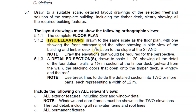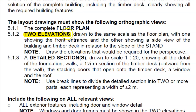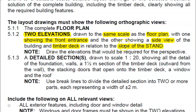Let's take a look at what is specified. You have to draw two elevations to the same scale as the actual floor plan, which for most of you will be 1:100. One of the views must show the front entrance, and the other shows a side view of the building including the timber deck in relation to the slope of the stand. The slope of the stand is going to be the catch on the second view.